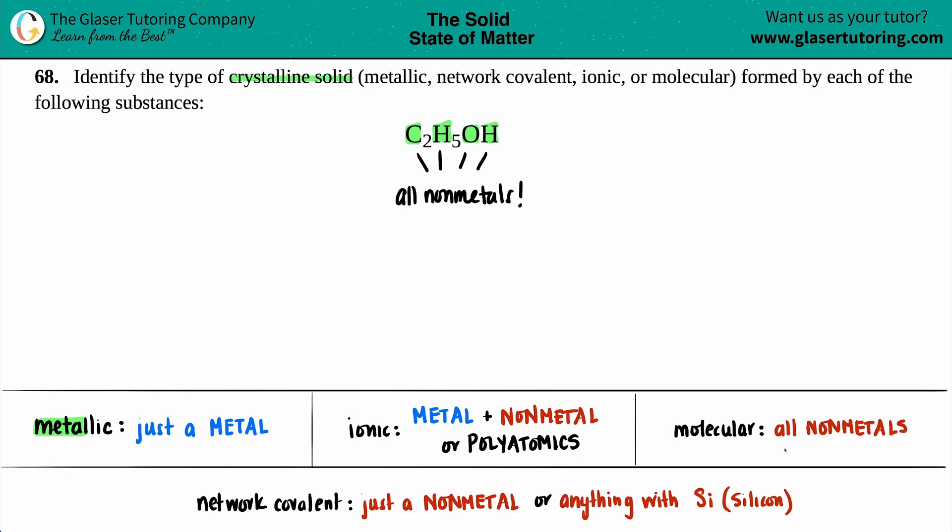Let's move on to molecular. Now, molecular crystalline solid comes from molecules, and molecules are always covalent compounds, and those are all non-metals. And that's what I have here - I just have all non-metals. So probably molecular, but let's just make sure that it's not the network covalent.